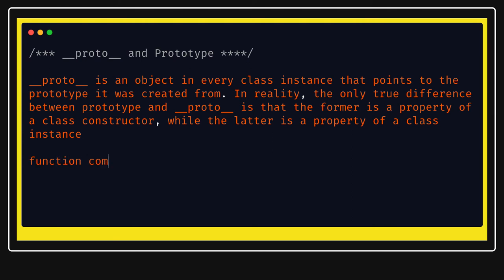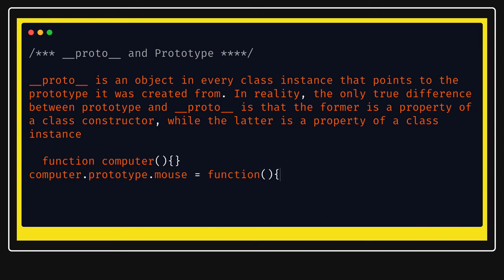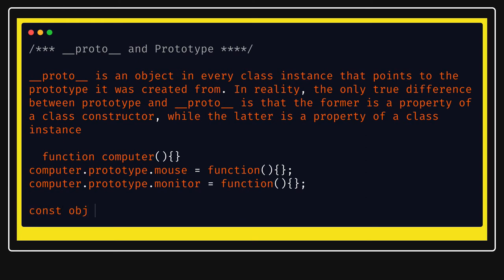We will create a simple computer function — this function does nothing on its own. Then we add prototype properties onto it: computer.prototype.mouse and computer.prototype.monitor. These are two prototype properties added to the computer function; there can be many more. To create an object from this constructor function, we simply write: const obj = new computer.